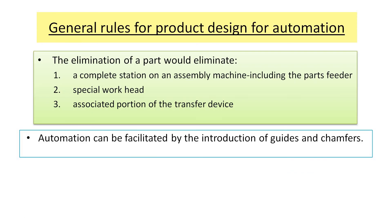Now let's talk about some general rules for product design for automation. Sometimes we need to simplify the designing process, and as we saw in the analysis, some components may need to be removed. Elimination of a part eliminates a complete workstation on an assembly machine, including the parts feeder — we may not need a feeding equipment, a special work head, or the associated portion of the transfer device. Ultimately, it depends on product to product and process to process as to what needs to be eliminated.